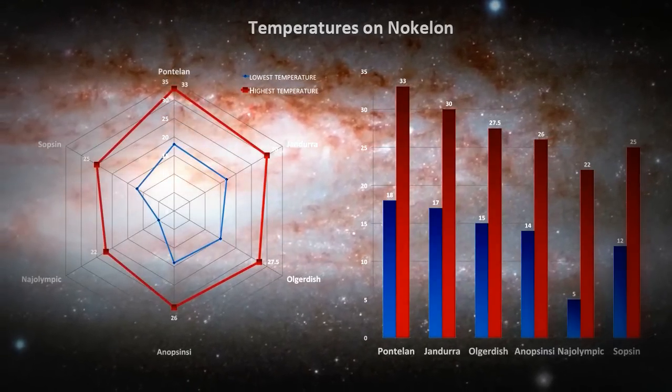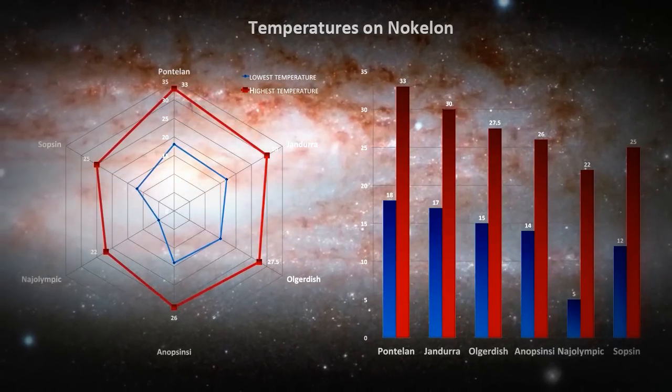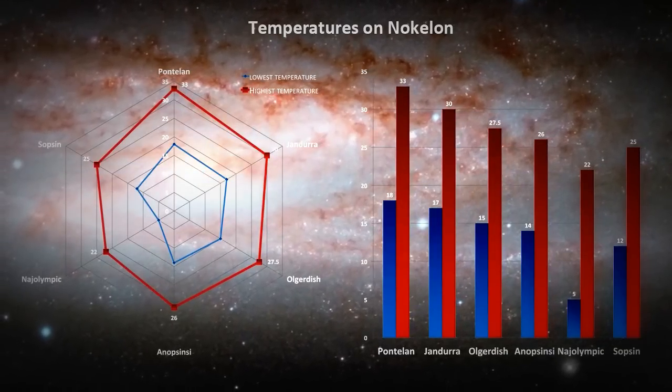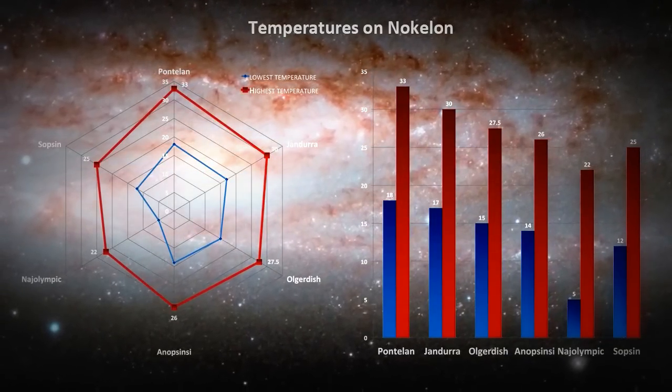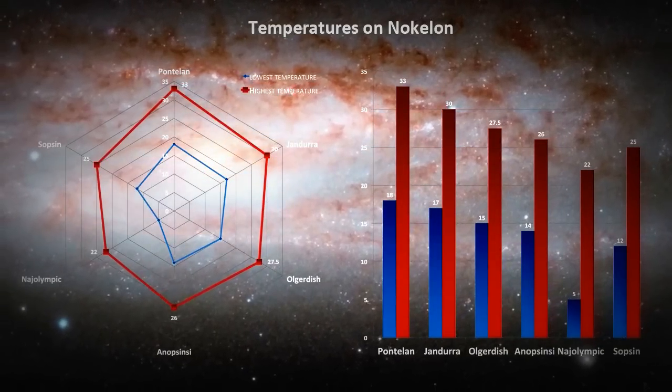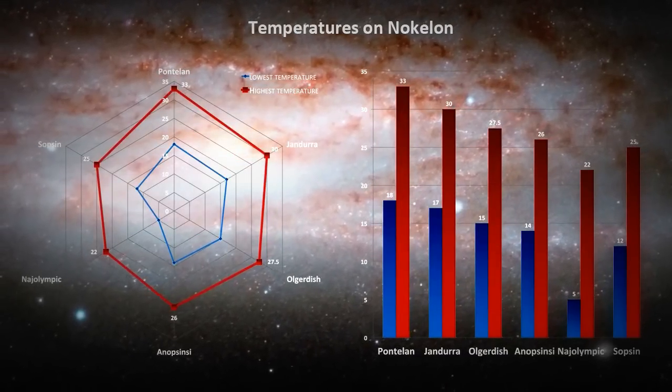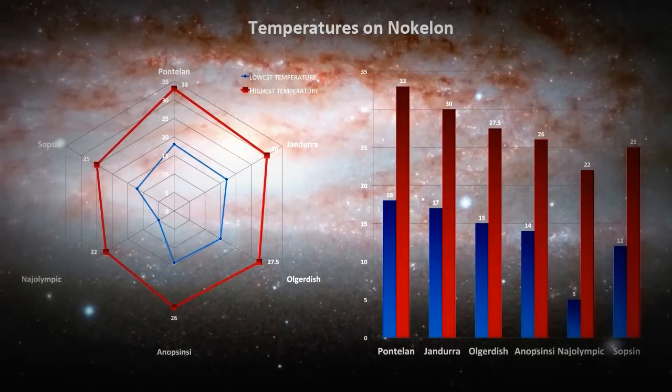The temperatures all around Nolcolon throughout the year range from 5 to 33 degrees which is a nice comfortable range of temperatures. Although they are still warmer than Earth at some points.